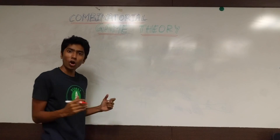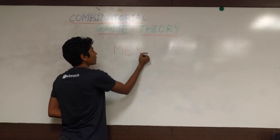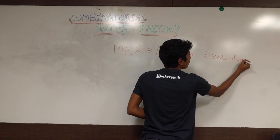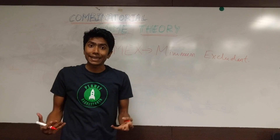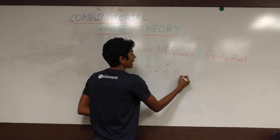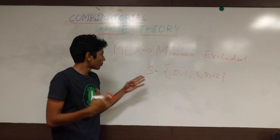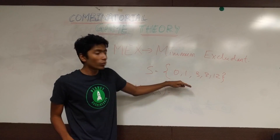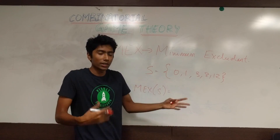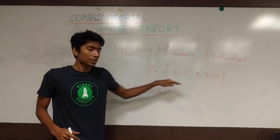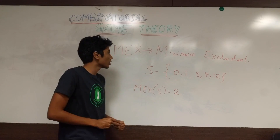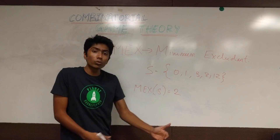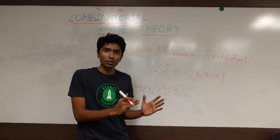The first operation we need to know about is called minimum excludant, or MEX for short. This is an operation performed on a set of non-negative numbers, and it gives you a single number — the smallest number which does not exist in the set. For example, if 0 and 1 exist in the set but 2 does not, then MEX is 2. This is useful because if S gives you the set of moves you can play, MEX tells you the smallest move you can never play.